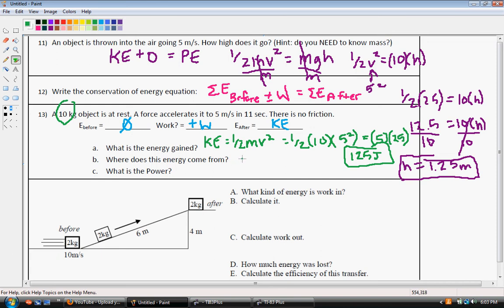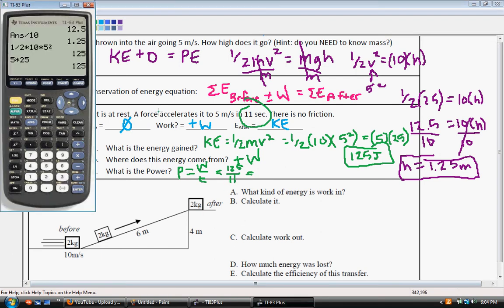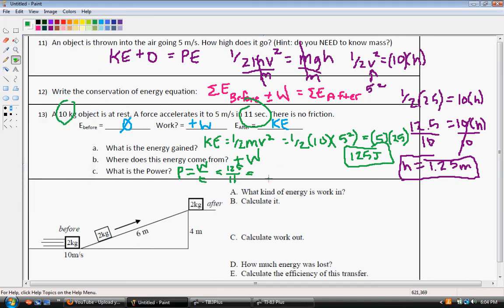So we actually have 125 joules of energy that we added to our system. All right, so where does this energy come from? Well, it came from the positive work. And what is the power? Well, we know that power is work over time, and the work is the amount of kinetic energy we added, so that's going to be 125, and we did that in 11 seconds. So our time is 11, so 125 over 11, is our power. So it did 11.4 watts of power.